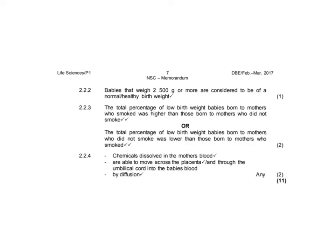Moving into the final part of the memo, here are the answers for questions 2.2.2 to 2.2.4. For the last question it says 'any two', meaning you can use any two of the answer points about the mother's blood moving through the placenta or the umbilical cord by diffusion. What's interesting is that only three options are provided — there's no extra tick on the umbilical cord point — so you almost have to give a near-perfect answer to get full marks. It's not the content that makes it difficult; it's the quality of answer required.